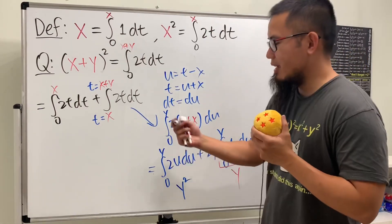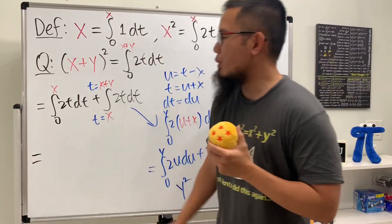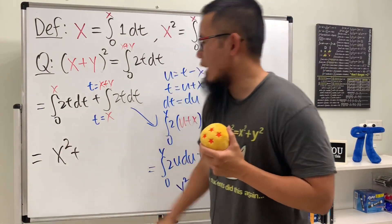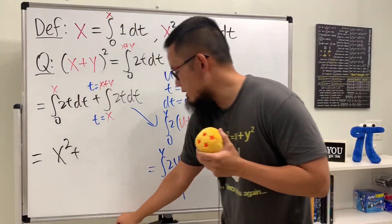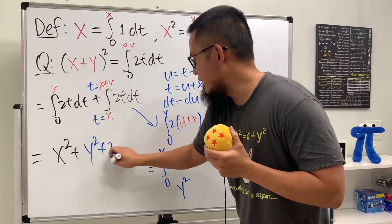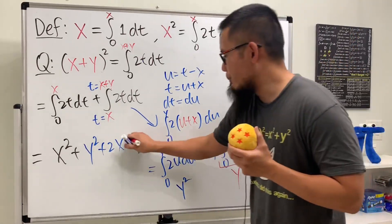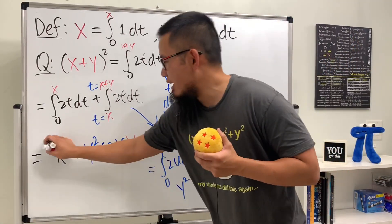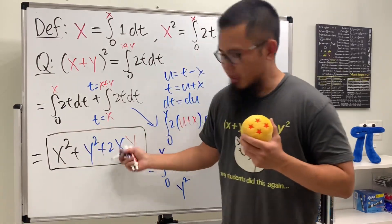So altogether, we can come back here and finish this question. This right here is equal to, the first guy is just equal to x squared. Next, we will have y squared. So let's put that down real fast. And then we have 2x. And then lastly, we have the y. So put that down right here. And altogether, this is the correct answer, not this one.